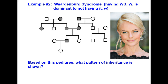Next, let's take a look at another example — Waardenburg syndrome. Having Waardenburg syndrome, capital W, is dominant to not having it, little w. People with Waardenburg syndrome typically have hearing loss, two eyes of different color or two colors within the same eye, a white forelock of hair, and sometimes white skin patches.